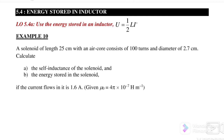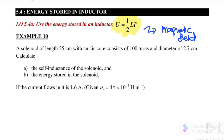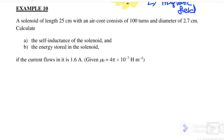That's all for 5.3. We will continue with 5.4: Energy Stored in an Inductor. The equation is U equals half LI². The energy stored in an inductor is in the form of a magnetic field — unlike a capacitor, which stores energy in the form of an electric field.